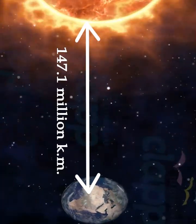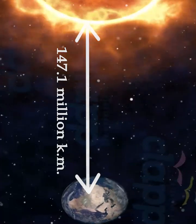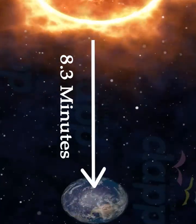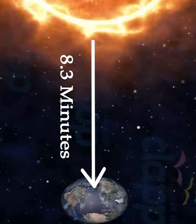Earth is at an average distance of 147.1 million kilometers away from the Sun. From this distance, it takes sunlight 8.3 minutes to travel from the Sun to Earth.